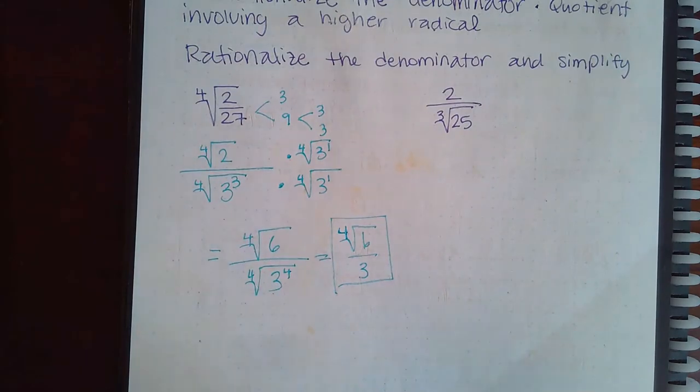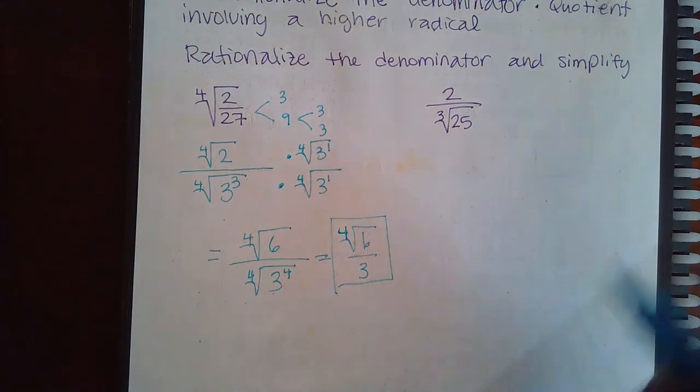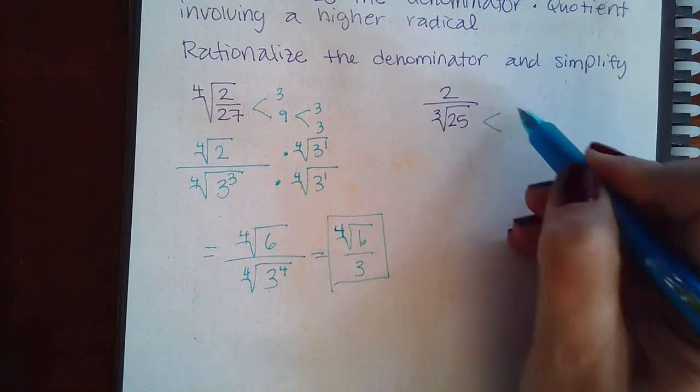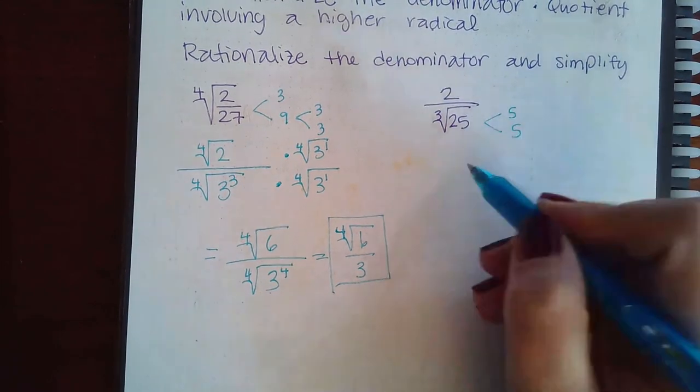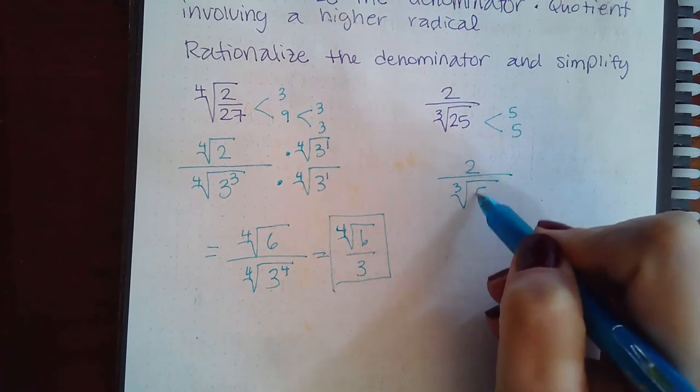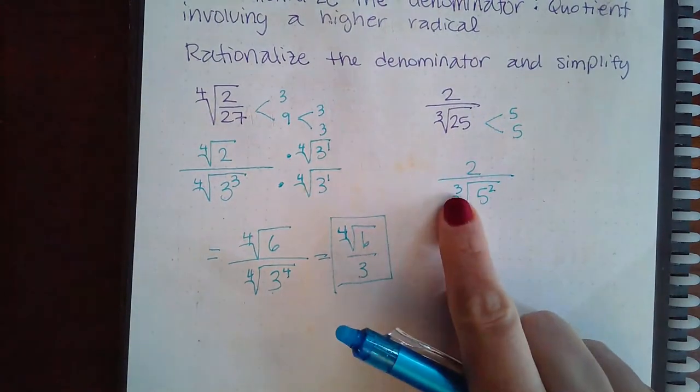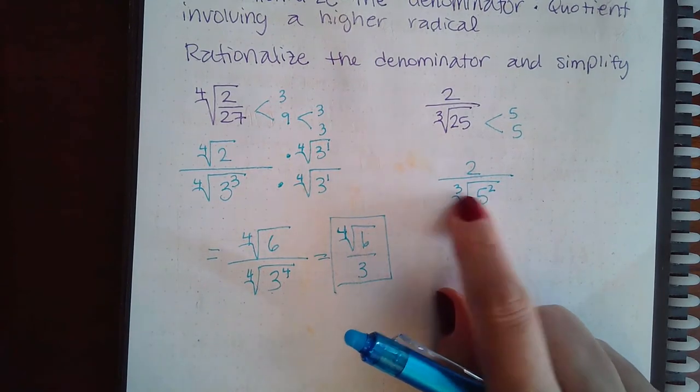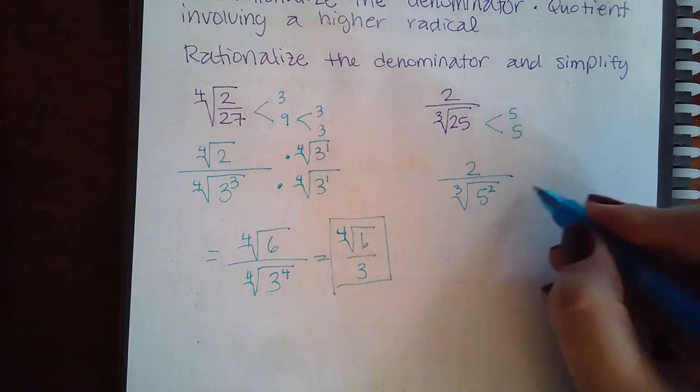Similarly we can do the same here. If I put that in its prime factorization, be this 2 and then the cube root of 5 squared. So now the index is 3 which means I need 3 as my exponent in order for them to cancel.